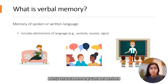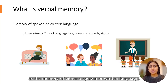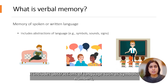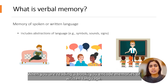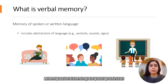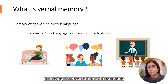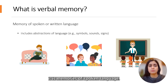Verbal memory can be defined as the memory of either spoken or written language. It includes abstractions of language such as symbols, numbers, sounds, or signs. When you are reading a book, you encode memories of written language. When you're listening to your professor or having a conversation with someone, it is memories of spoken language.